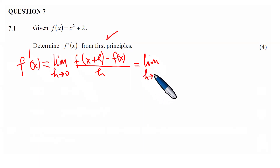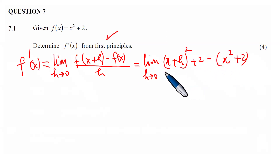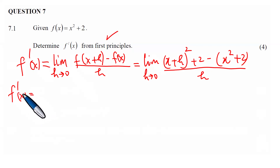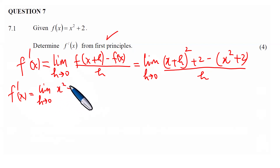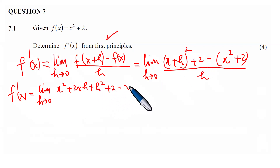As h tends to zero, we come to the function x² + 2, so we have the limit as h approaches zero of (x+h)² + 2 minus f(x), which is x² + 2, all divided by h. Expanding the bracket: x² + 2xh + h² + 2 minus x² minus 2, all divided by h.